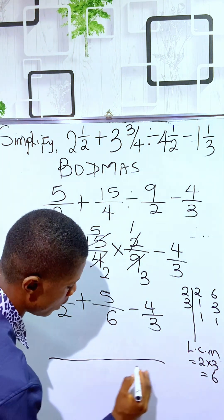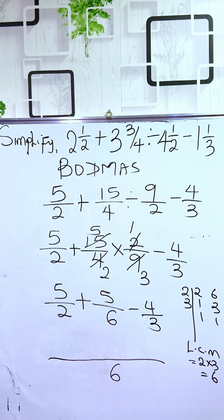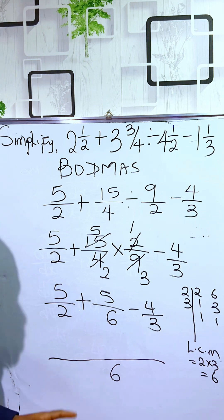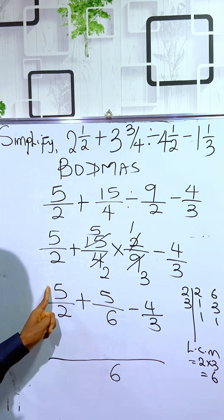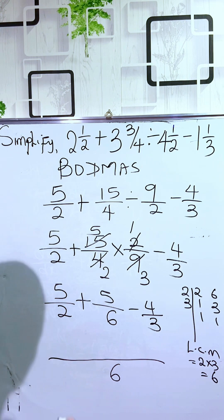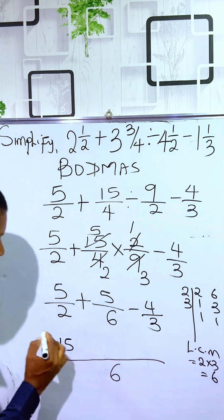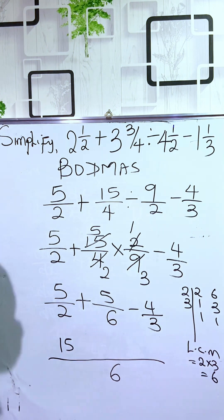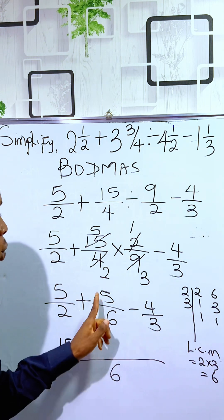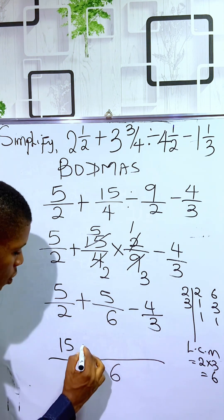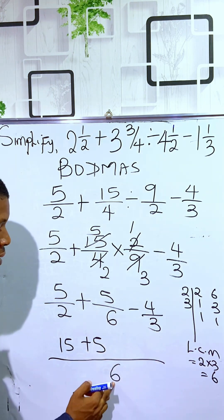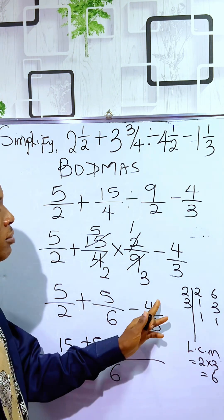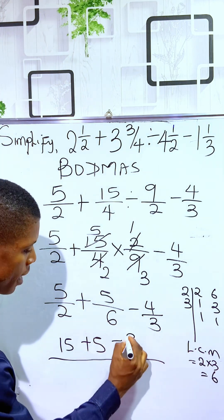We draw a straight line and write the lowest common multiple, 6. Then, 2 will divide 6 to get 3. 3 times 5 is 15. We write 15. Then, 6 dividing itself gets 1. 1 times 5 is 5. We put down 5. 3 divides 6 is 2. 2 times 4 is 8. Minus 8.